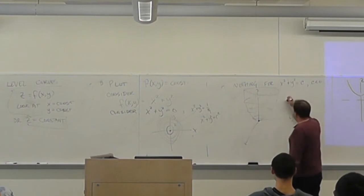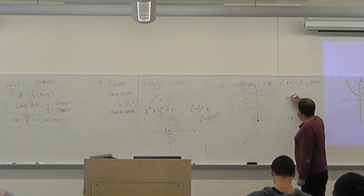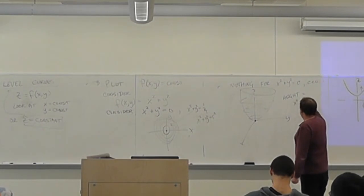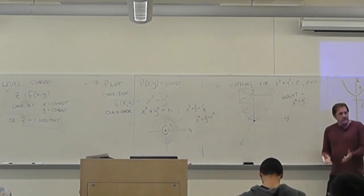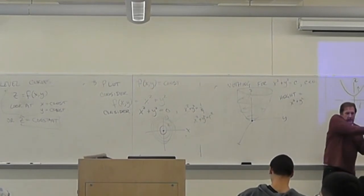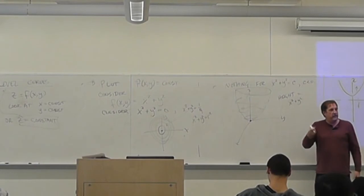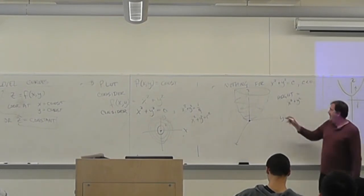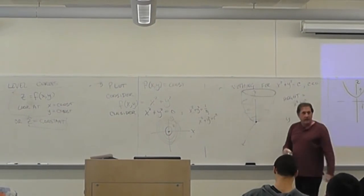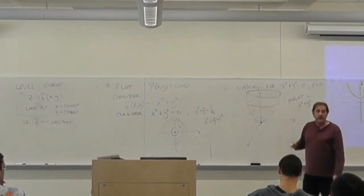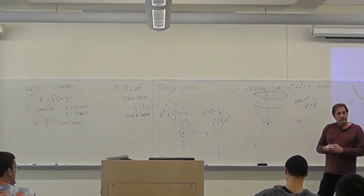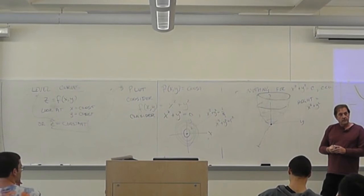The cross sections are a bunch of circles that grow with height. The only question is how do they grow — like a cone or like a parabola? We already know they grow like a parabola. What we're drawing is height = x² + y²; we take our chainsaw — or lightsaber — and cut it at a certain height, and what we're left with is a circle.